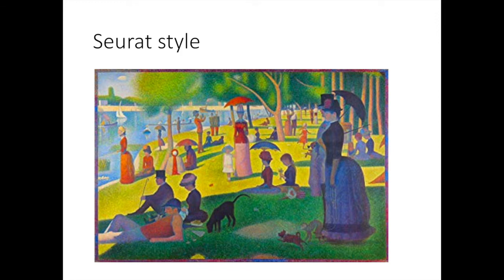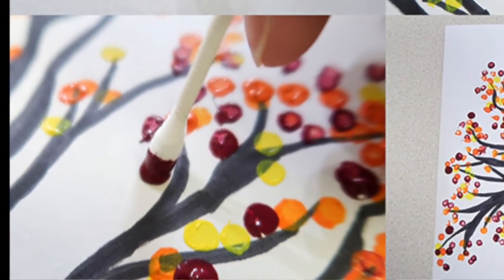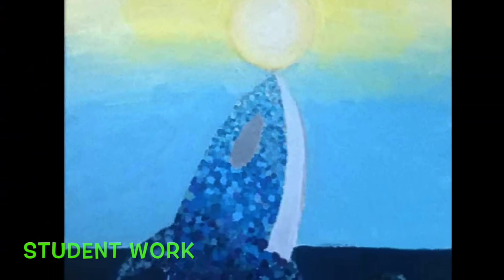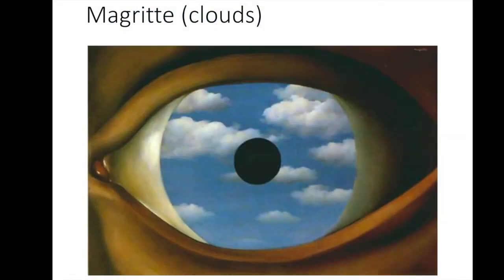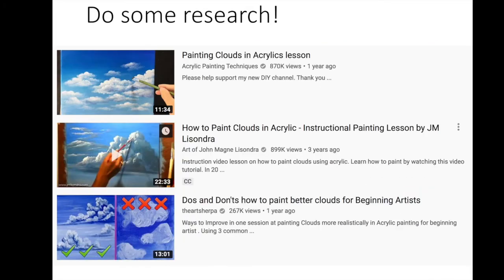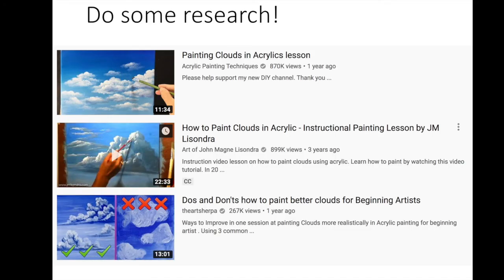Seurat's style is even more extreme than regular impressionist — it's done with lots of little tiny dots. You can achieve this by using Q-tips instead of a paintbrush to make the dots. A lot of folks like Magritte — he's famous for these blue skies with clouds. If you get to the point where you want to try some Magritte style clouds but don't know how, that's what the internet's for. Do some research — go onto YouTube and there's tons of stuff about how to paint clouds. You do want to do some research on whatever style you are doing.